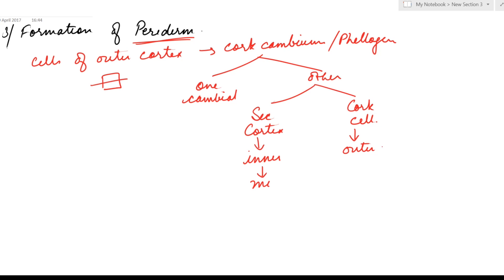More of secondary cortex and less of cork cells are produced. Cells of the secondary cortex are thin-walled living cells, while cork cells are dead at maturity with walls thickened with suberin, due to which they are impervious to water.